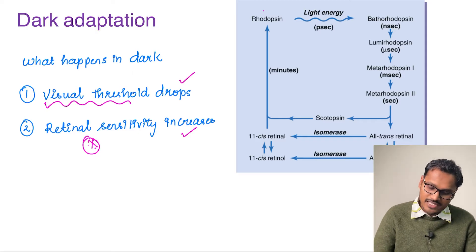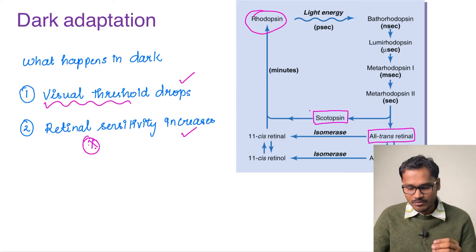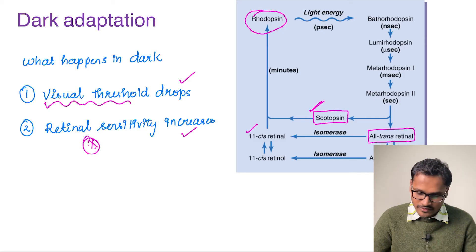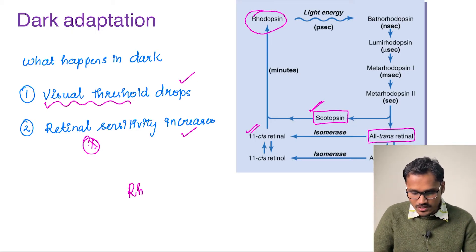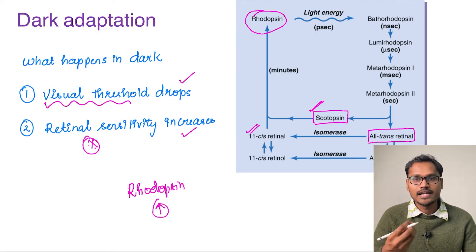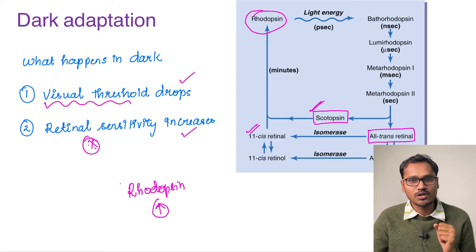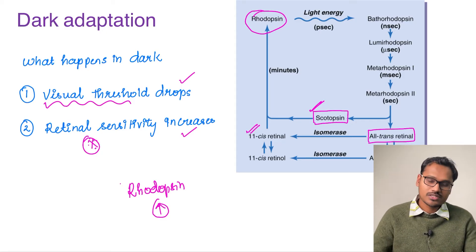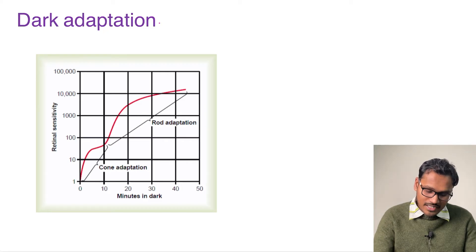In the previous session we saw that rhodopsin, when exposed to light stimulus, gets bleached into scotopsin and all-trans retinal. In a darker environment this bleaching process does not happen, so more and more scotopsin and all-trans retinal are available, and they combine to form more and more rhodopsin. So first of all, the amount of rhodopsin increases, and because of the huge quantity of photopigment even a slight light allows the person to see, and the sensitivity of the eye can increase to very high levels.